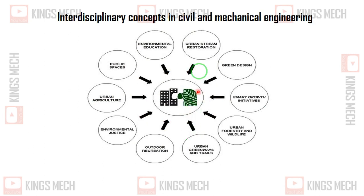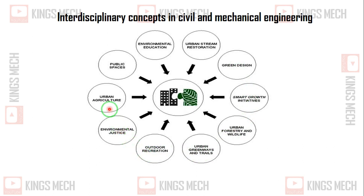These are the variable things: environmental education, urban stream restoration, green design, smart growth initiative, urban forestry and wildlife, urban greenways, outdoor recreation, environmental justice, urban agriculture, and public spaces. So these are the streams that can be accompanied with interdisciplinary concepts in civil engineering.